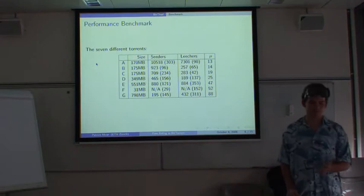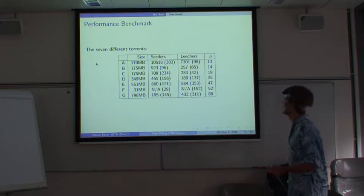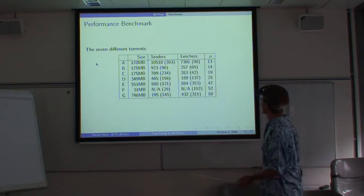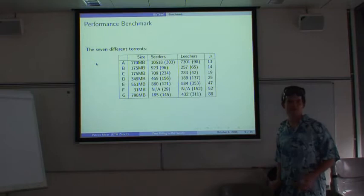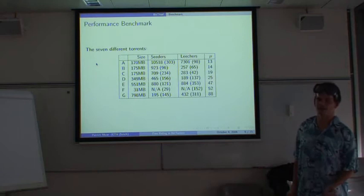So one benchmark we did was with seven different torrents. There are different sizes, pretty small ones, very small ones, and some larger ones. The amount of the peers that were in the network varied also greatly. These are the times the normal BitTorrent client needs to download these files. In these cases, the client did upload at full speed.